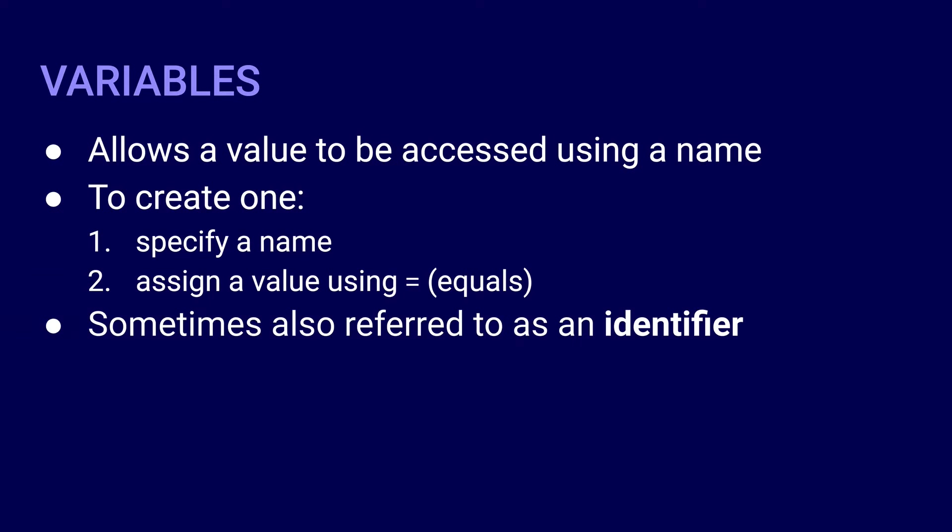Another term that you might see used to refer to variables is the term identifier. This one has a wider scope — it can also be used to refer to other types of names. For example, the name of a function, such as print, can also be referred to as an identifier because it is a name that identifies a specific function.